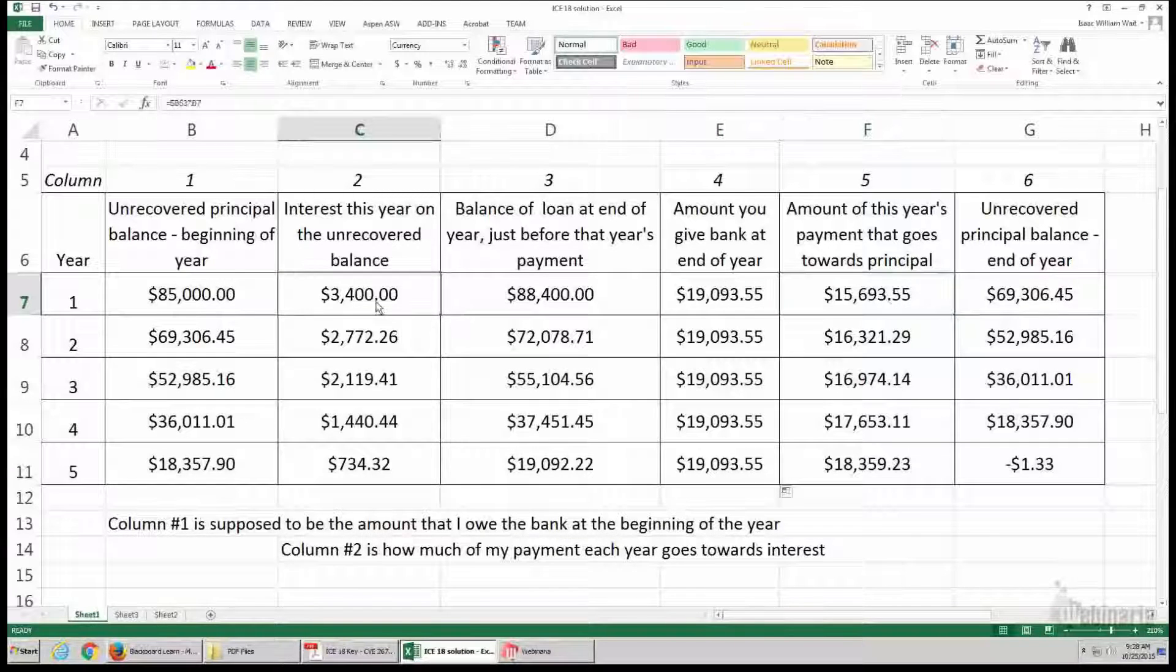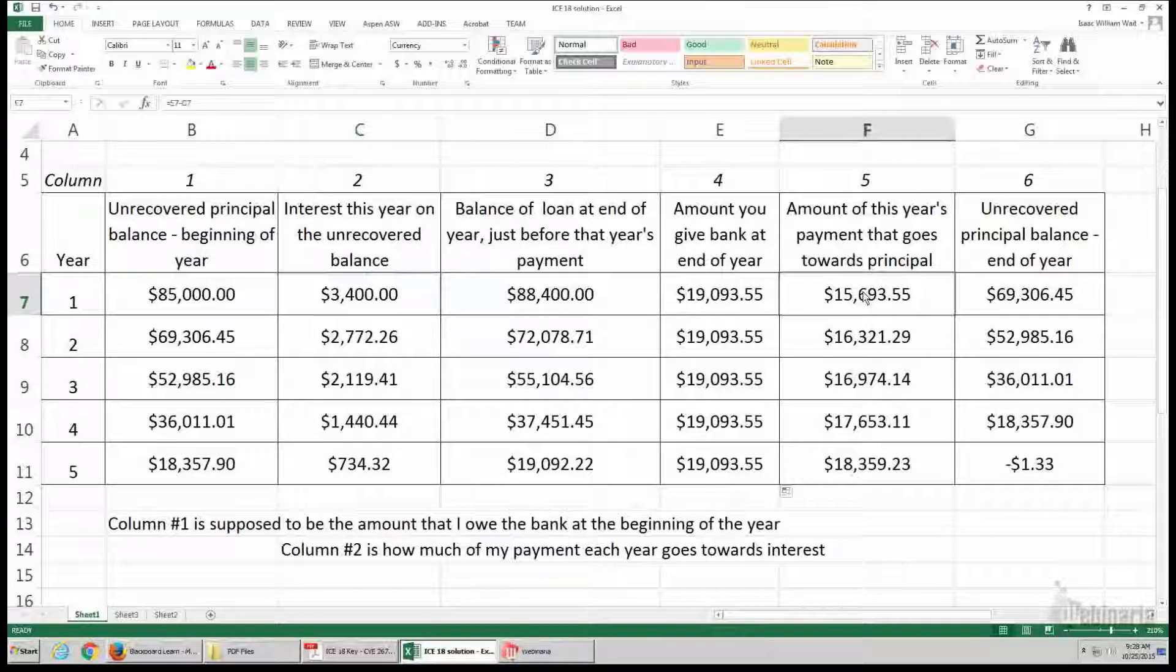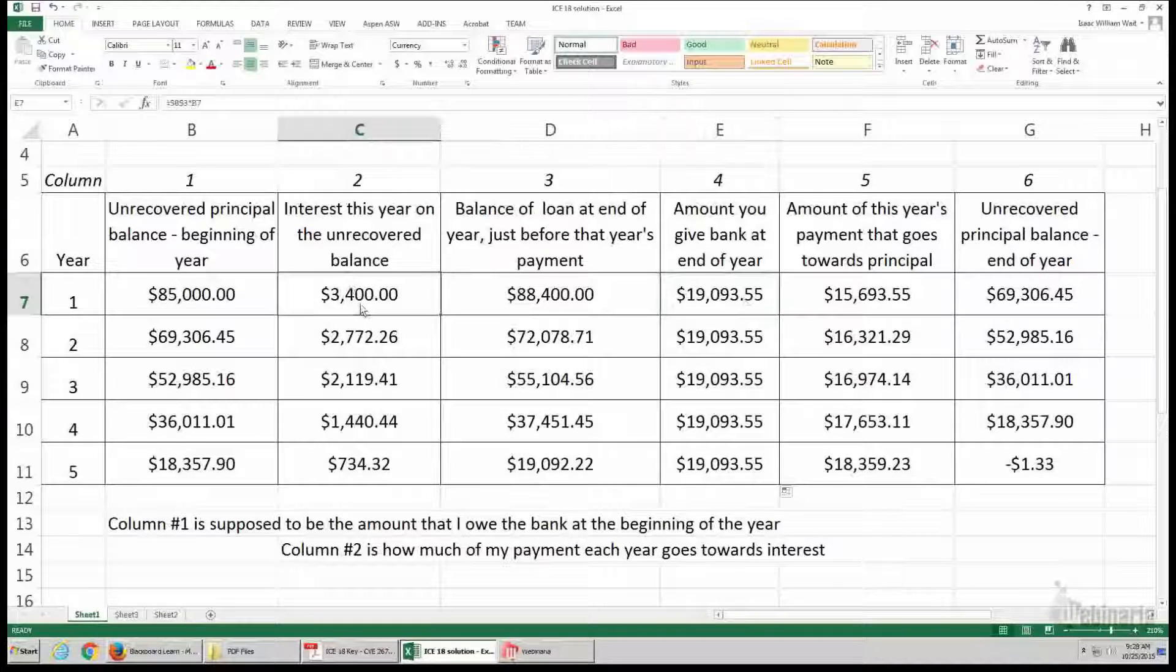Now this column five is just telling you, if this was the interest, then this is how much the principal should be, because the total payment has two components. As we wrote on the board, the total payment is interest and principal.